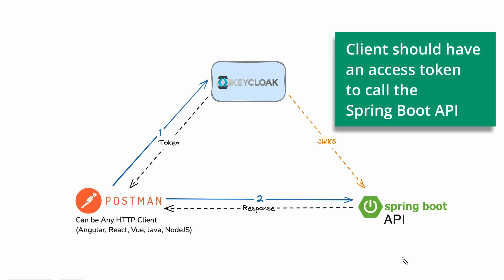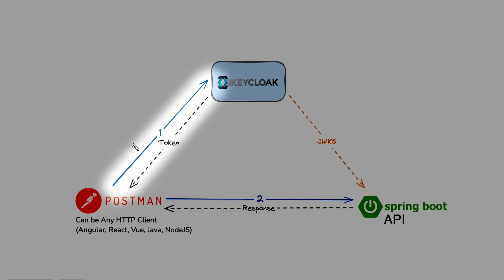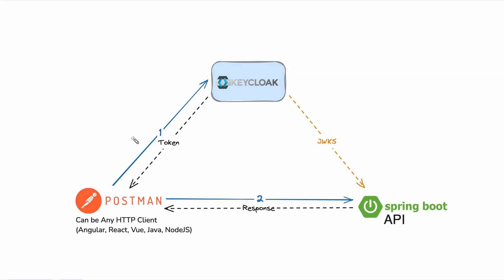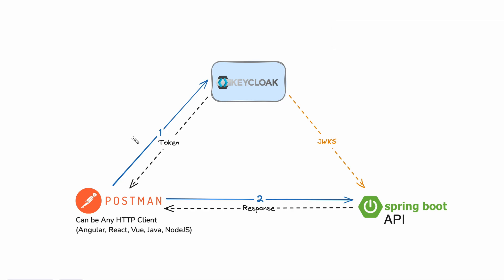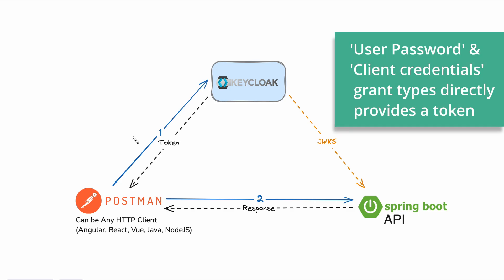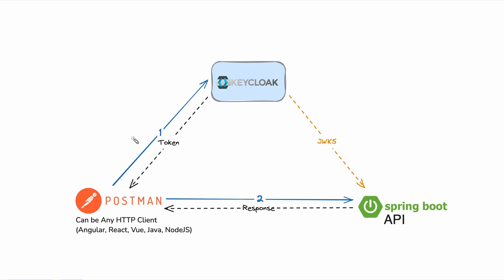In order to call the Spring Boot API from the client application, the client first has to get an access token. As the first step, the client application calls Keycloak and retrieves an access token. Based on the OpenID Connect grant type you are using, this flow can change. Using a direct request and response is valid for the password grant type and client credentials grant type, but if you're using implicit flow or authorization code flow, there will be a different flow.